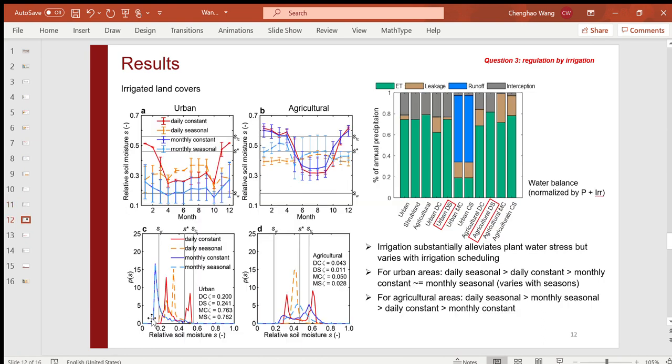These two plots above show the dynamic relative soil moisture over time, while the bottom two show the probability density function of soil moisture. In general, irrigation can substantially alleviate plant water stress, but the improvement varies with irrigation scheduling. Based on mean water stress, daily seasonal practice is the best among all schedules for urban areas, followed by daily constant, and two monthly schedules. Daily seasonal practice is also the best for agriculture, followed by monthly seasonal schedule.